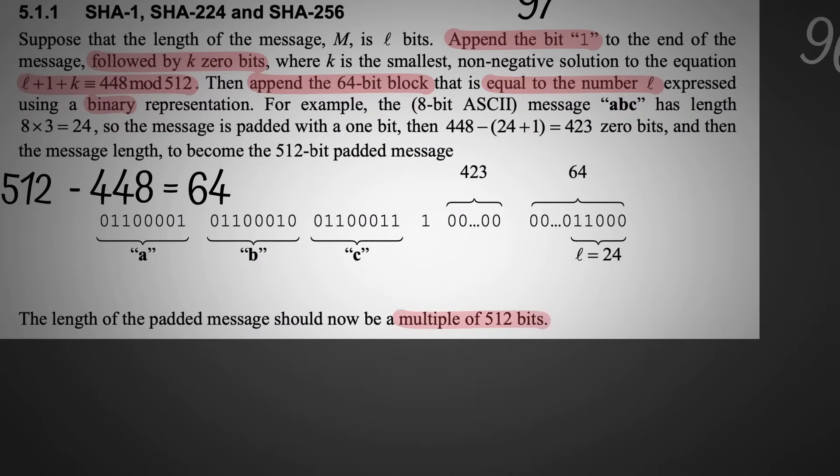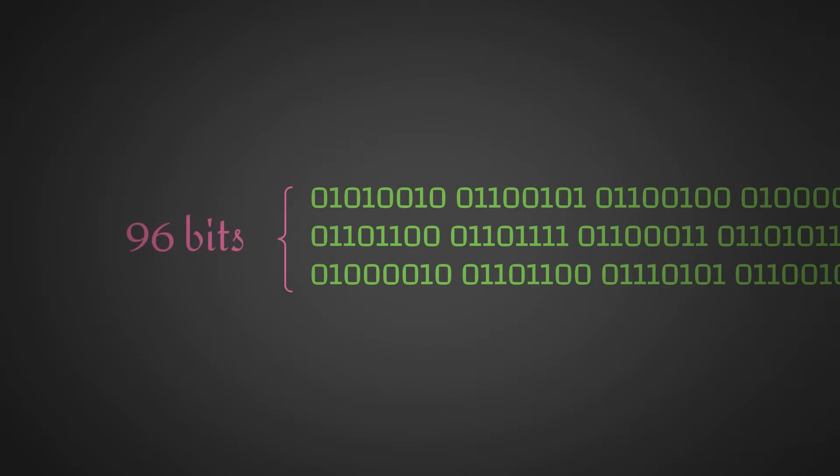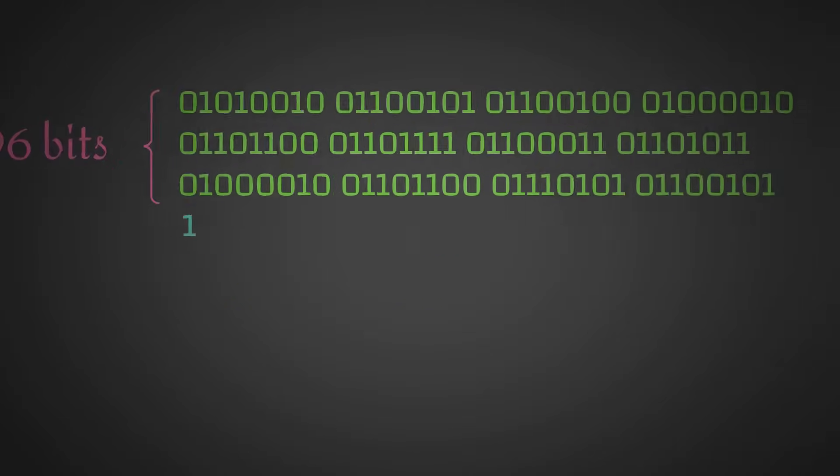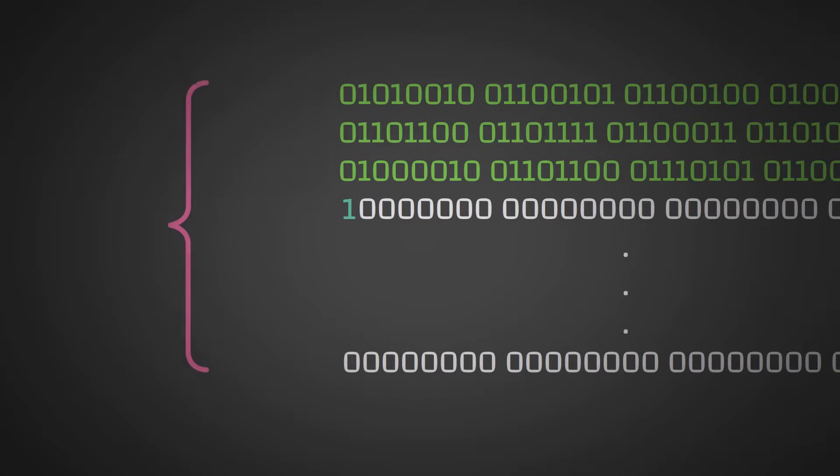After we have done all this, our padded input will have a bit length that is a multiple of 512. Here is our original input, which is 96 bits. We add a singular 1-bit and keep adding 0s until we get to 448 bits.